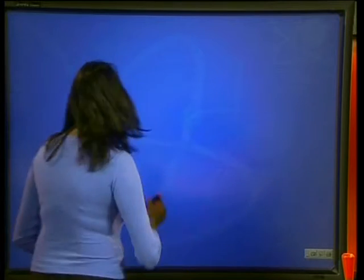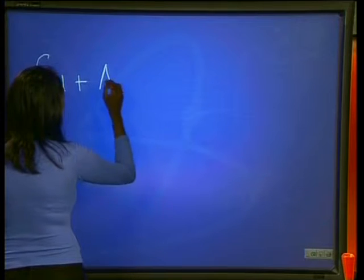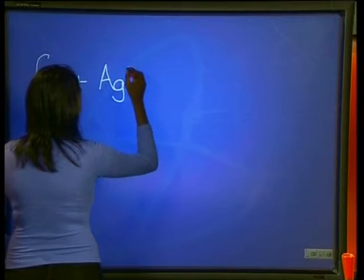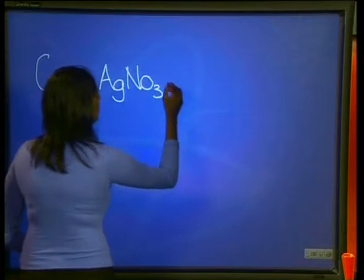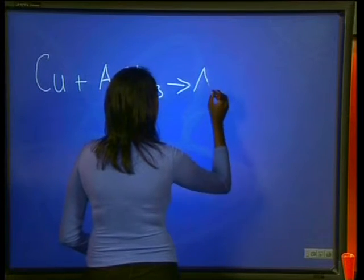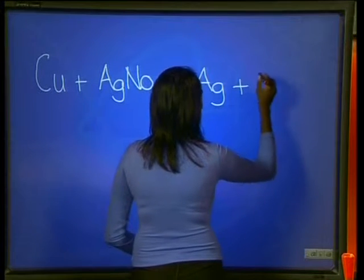If you got the task questions right, well done. Thanks John for those fantastic results, and congratulations to all of you who got this right. As with all experiments, we need to have a balanced chemical equation, and that's what we're going to do now. The chemical equation for this reaction is copper plus silver nitrate becomes silver plus copper nitrate.